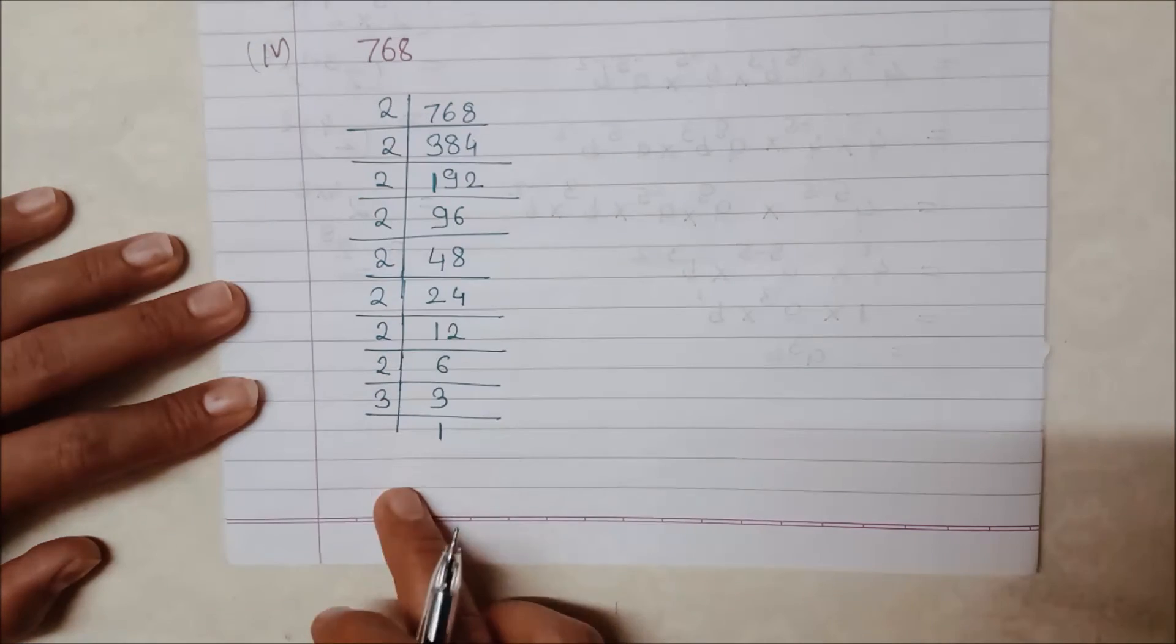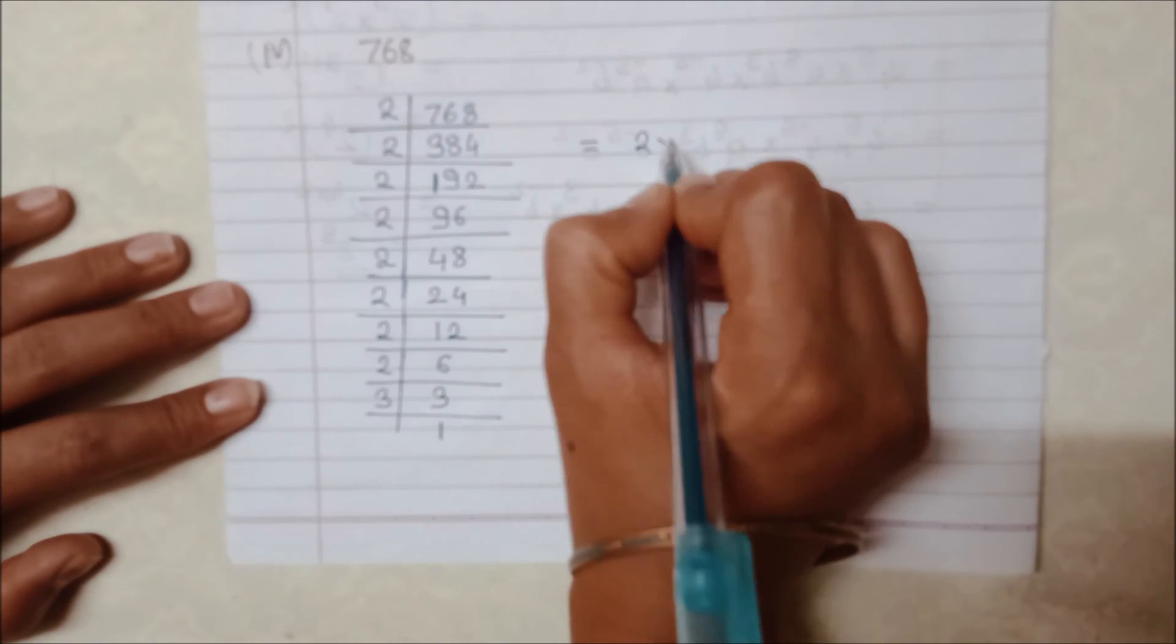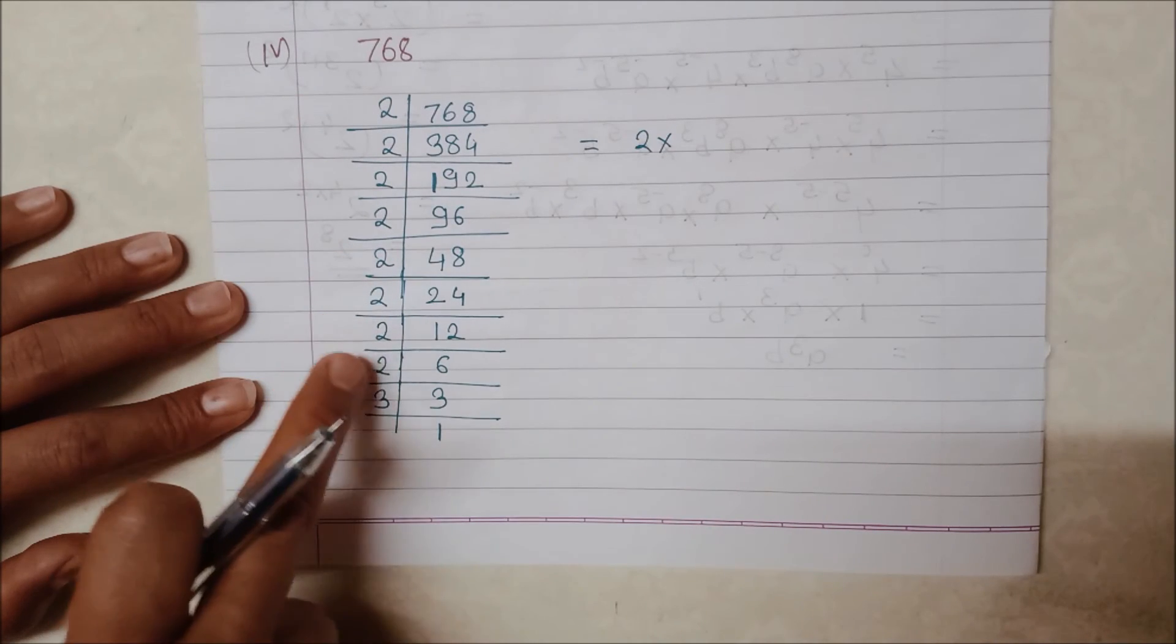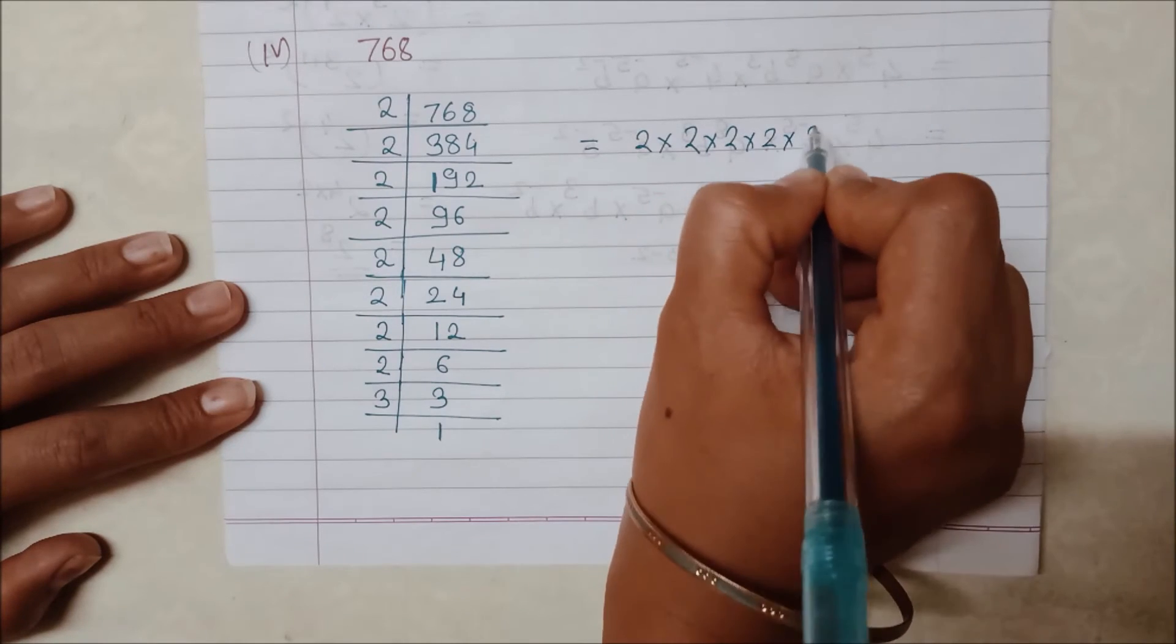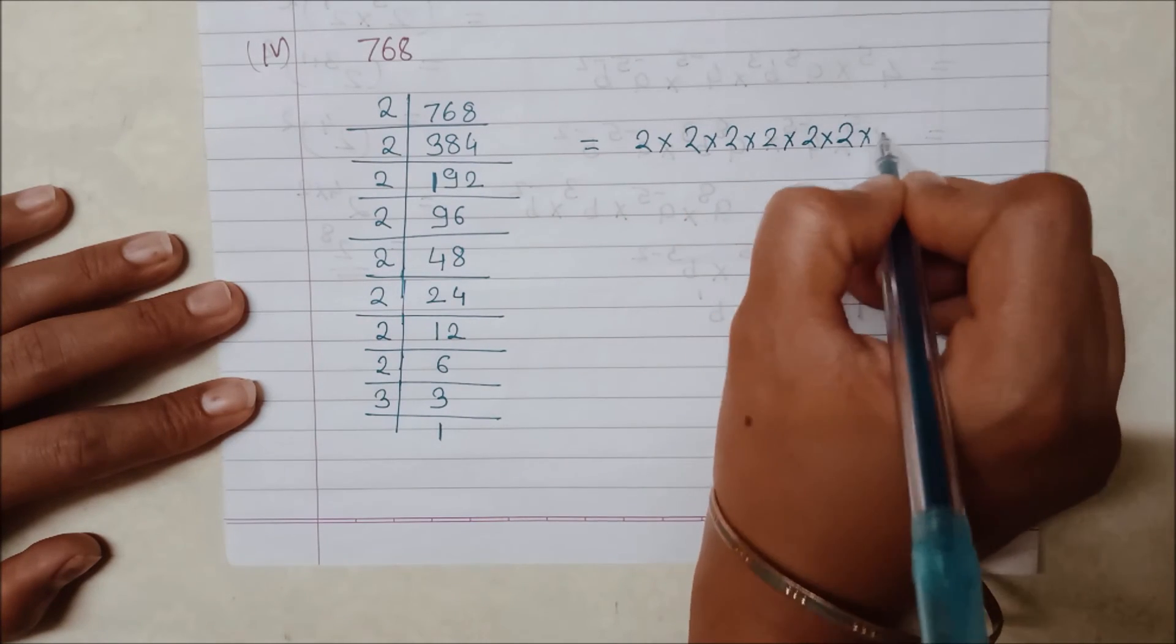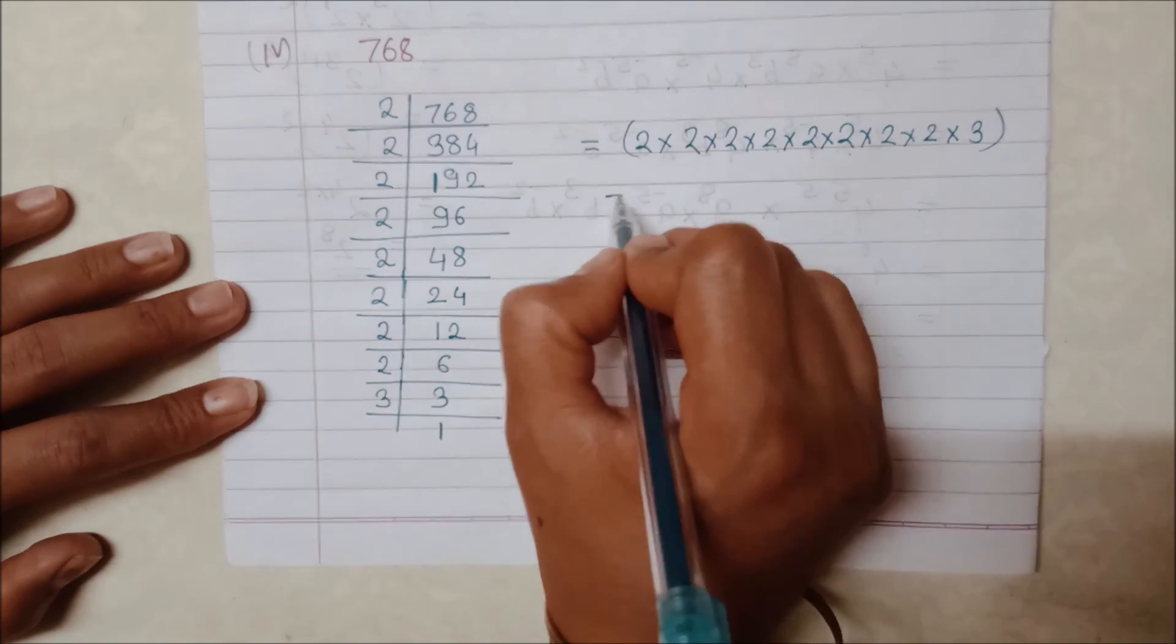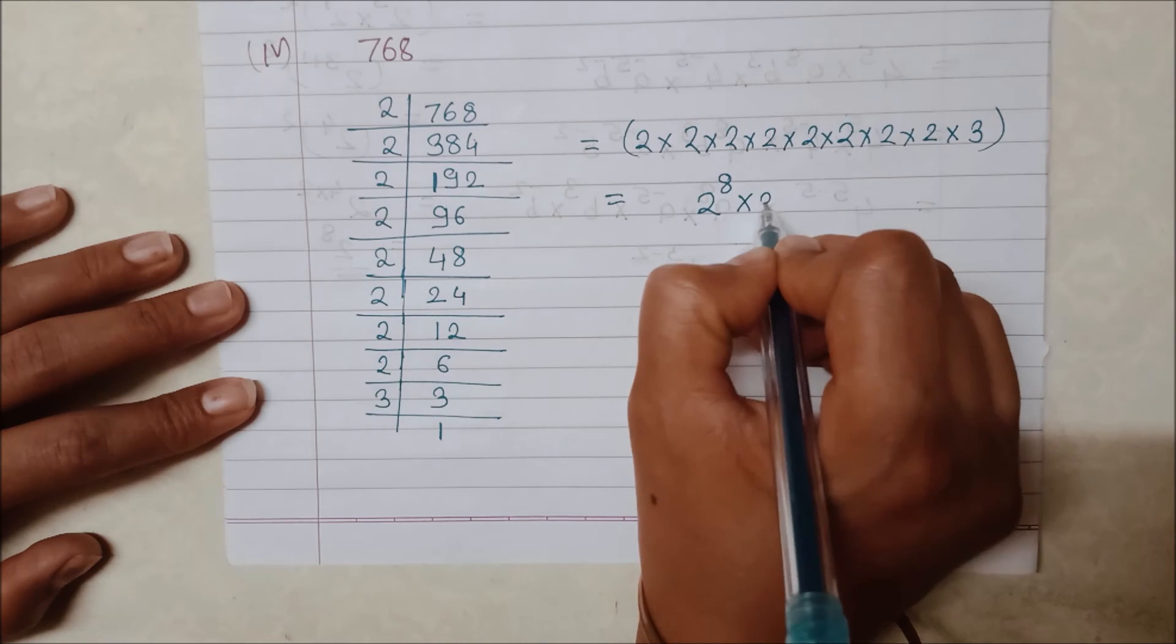So, these factors of 768 are 2 and 3. We have to write it as 2 to the power of something times 3. How many times are there 2? 1, 2, 3, 4, 5, 6, 7, 8. So we can write 2 to the power of 8 times 3. You can write this.